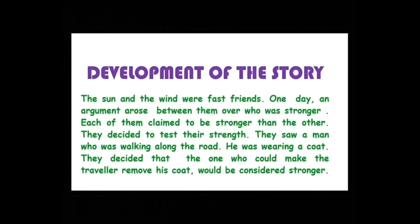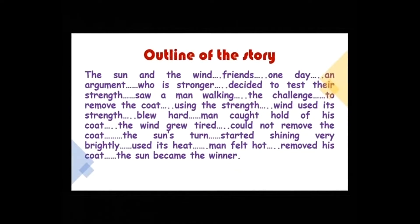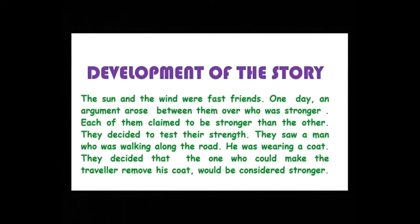Development of the story — The Sun and the Wind were fast friends. One day an argument arose between them over who was stronger. Each of them claimed to be stronger than the other. They decided to test their strength. They saw a man who was walking along the road. He was wearing a coat. They decided that the one who could make the traveller remove his coat would be considered stronger.